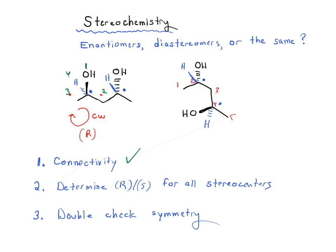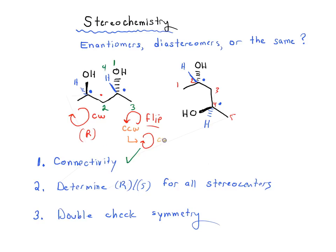Over here on the other side — the OH is in the back, so that's priority 1. We've got this carbon as priority 2, CH3 as priority 3, and hydrogen as priority 4. Going 1, 2, 3 — it's actually counterclockwise, but our hydrogen is a wedge, meaning it's in the front instead of the back. So we need to flip it to go the opposite direction. If it starts off counterclockwise, we flip it to clockwise, which makes it R. So this carbon is also R.